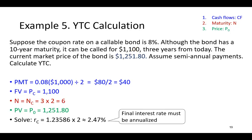So anyhow, this bond can be called three years from now. The current market price on this bond is $1,251.80. And we're going to assume semi-annual payments in calculating the yield to call.